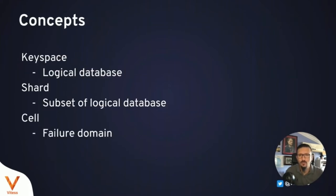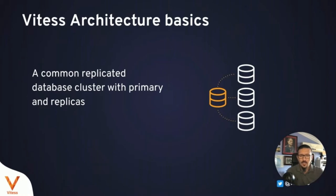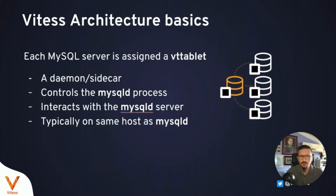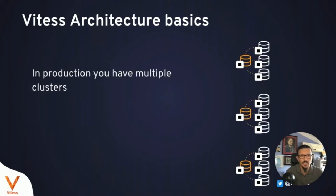Vitesse is a sharded system with a keyspace concept for a logical database, a shard as a logical database, and a concept called cell for a failure domain. The architecture serves with primary and replicas using MySQL primary/replica concepts, and comes with a VT tablet, which is a sidecar to a MySQL daemon process that sits next to MySQL and drives the Vitesse process. Here's an example of multiple clusters running under Vitesse for large implementations.